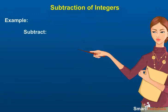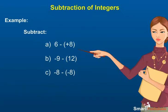Example: Subtract (a) 6 - (+8), (b) 9 - 12, (c) 8 - (-8), (d) (3 - 8) - (-7 - 1).